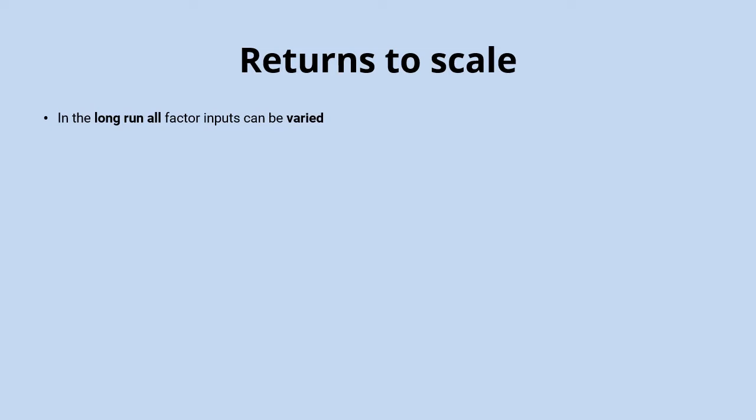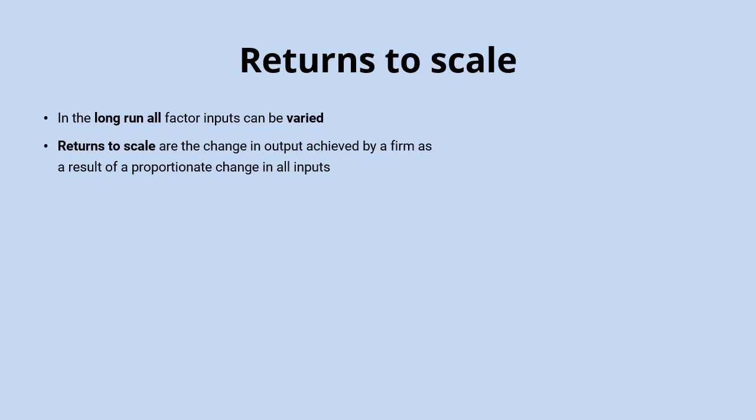In the long run, all factor inputs can be varied. And in the long run we see returns to scale, which are the change in output achieved by a firm as a result of a proportionate change in all of those inputs. So now the bakery can grow by opening new stores, buying more ovens, and employing more staff. In this situation, it becomes a bit less certain as to what the impact of those increasing inputs is going to be on the level of output achieved.